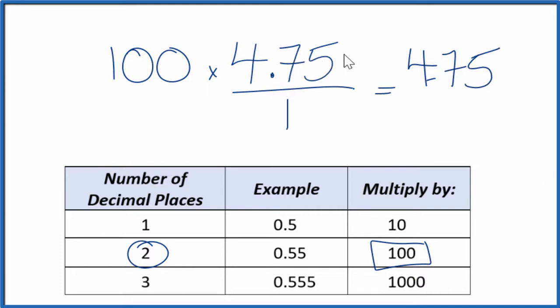But I can't just multiply the numerator by 100. I also need to multiply the denominator by 100. 100 divided by 100, that's just 1. So again, we're not changing the value, just the way it's written. So 100 times 1 equals 100. And we have our fraction, 475 over 100.